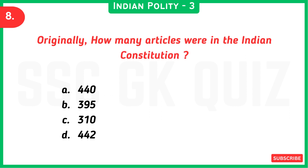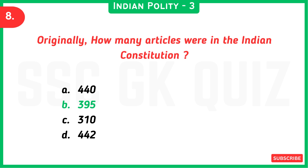Next question: originally, how many articles were in the Indian Constitution? Answer is option B, 395.